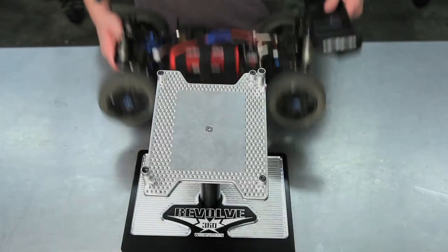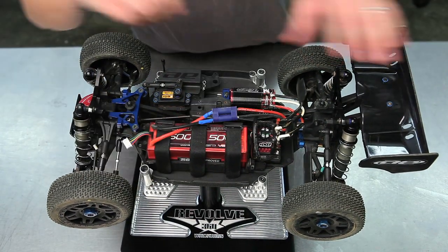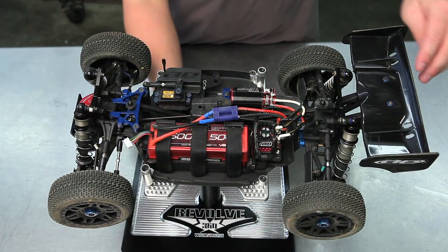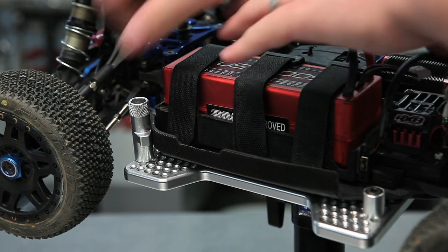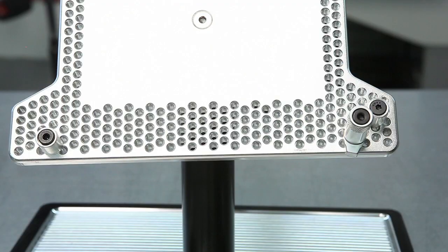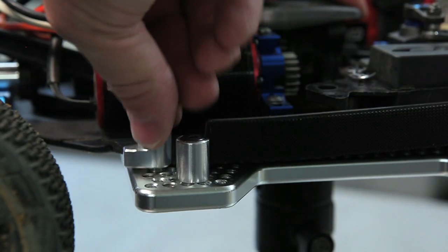As with some eighth scale buggies, you may need to set up the top plate sideways as with this Associated 8.2 e-buggy. Our locking tabs are still placed diagonally from each other, one flat and one tall, with an extra locating tab to help ensure the car does not slide on the workstation.